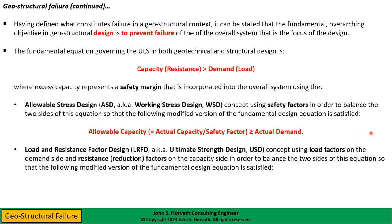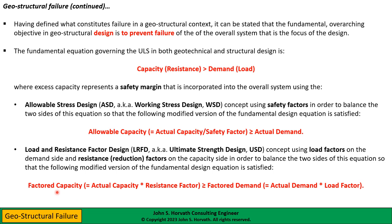The alternative is load and resistance factor design, LRFD — when it first came out it was called ultimate strength design. This uses load factors on the demand side and resistance or reduction factors on the capacity side. The modified version of the fundamental design equation becomes the factored capacity — the actual capacity reduced by a resistance factor less than one — which equals or exceeds the factored demand, which is the actual demand times a load factor typically greater than one.